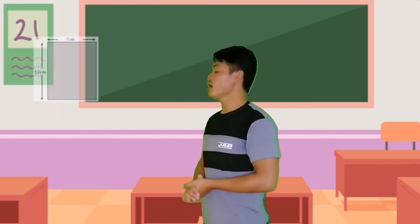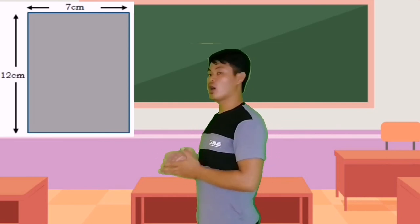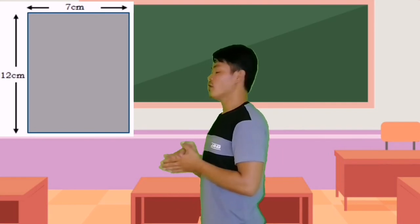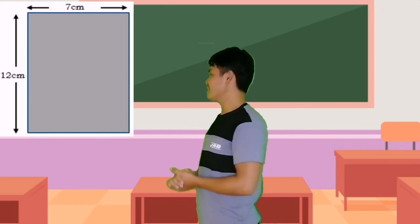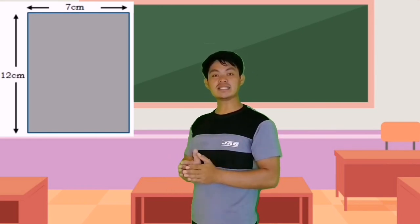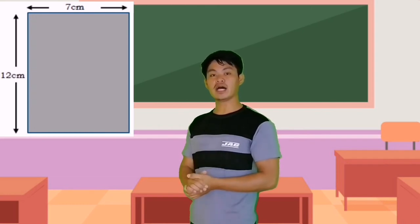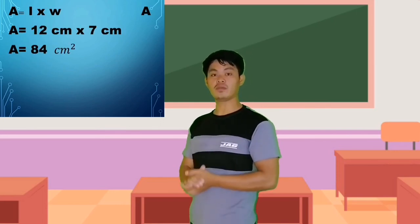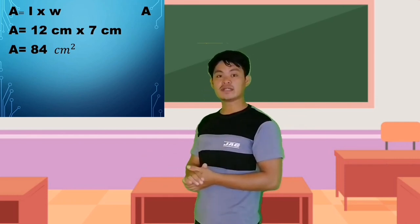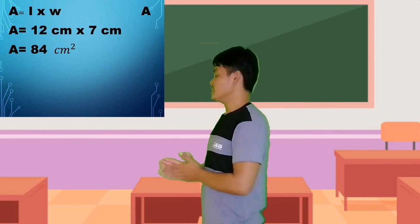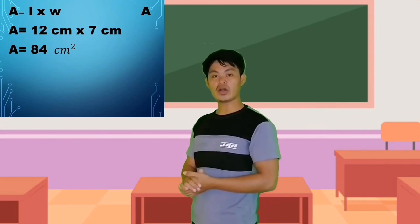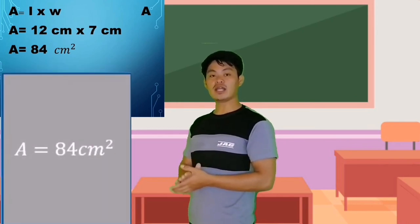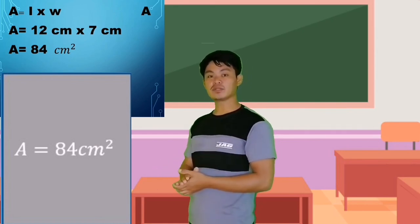Step 1: Area of rectangle A. The length of rectangle A is 12 cm and the width is 7 cm. Using area equals length times width, we have area equals 12 cm times 7 cm, which equals 84 cm squared. So the area of rectangle A is 84 cm squared.